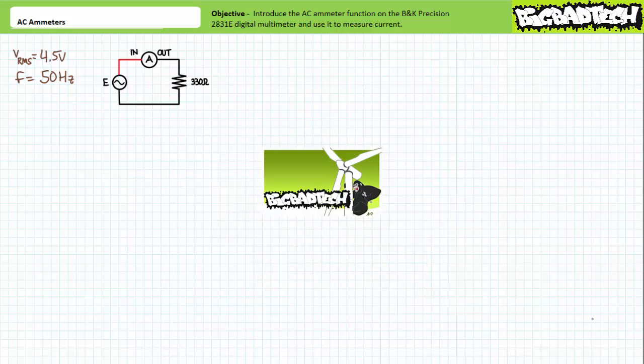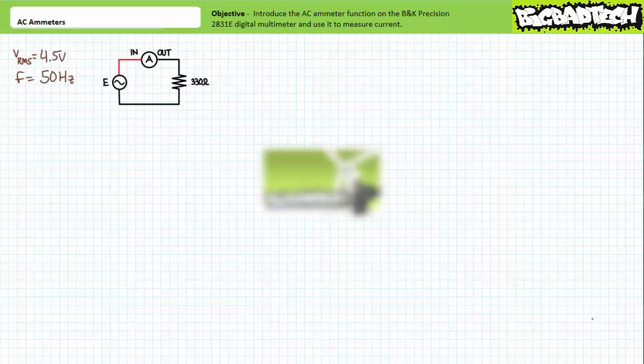If you recall in the function generators lecture, available at the Big Bad Tech channel, we set out the BK Precision 410A function generator to produce sinusoidal voltage output with a 4.5 volt RMS value at a frequency of 50 hertz. Recall we initially established this output voltage in an unloaded condition, and again in a loaded condition when the function generator was actually supplying current to a 330 ohm resistor. We can therefore be reasonably certain that our output hasn't drifted from the desired 4.5 volt RMS at 50 hertz.